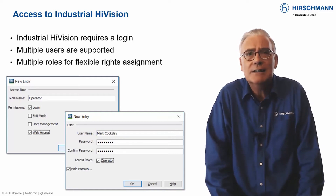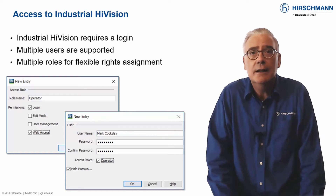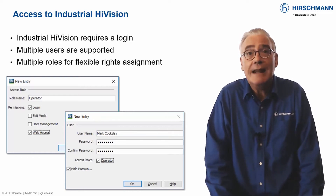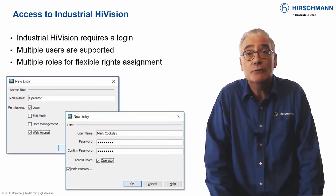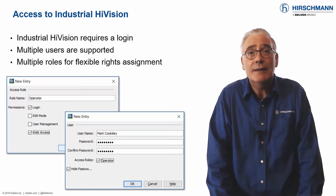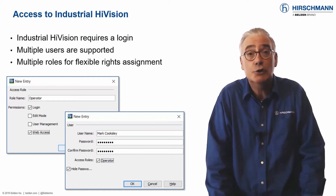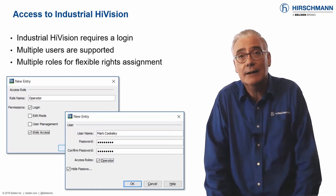For more advanced security, user accounts are supported. The accounts are used to force a login to Industrial HiVision. It's also possible to create roles with assigned permissions. These roles can then be allocated to individual user accounts.